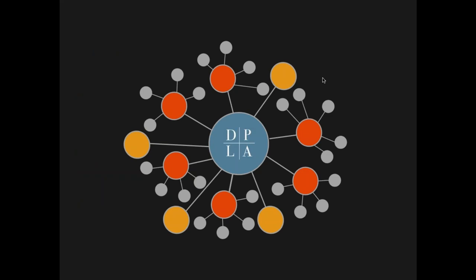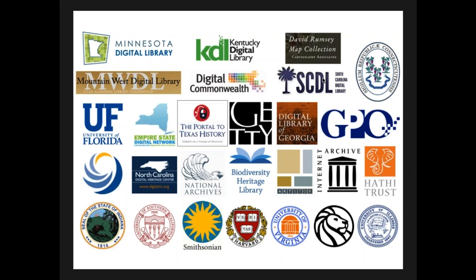This is a graphic of the DPLA network. The orange dots represent service hubs, which are geographic in nature—typically state-based or regional. The gray dots represent individual institutions that contribute to those hubs—individual institutions within a state that contribute to a centralized aggregation. The yellow dots represent content hubs: individual institutions that contribute to DPLA on a one-to-one basis, such as the National Archives and the New York Public Library.